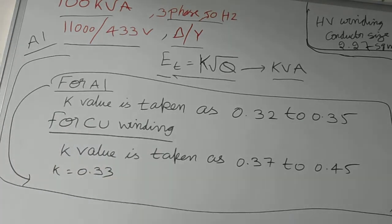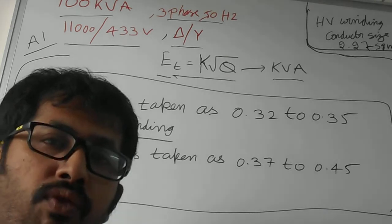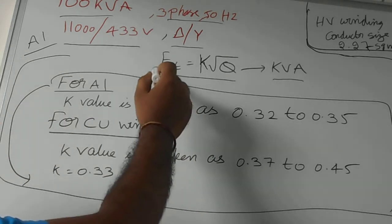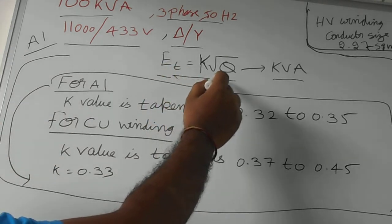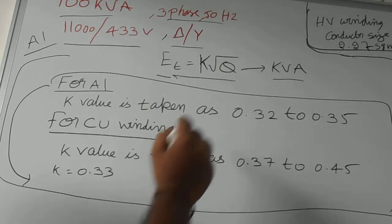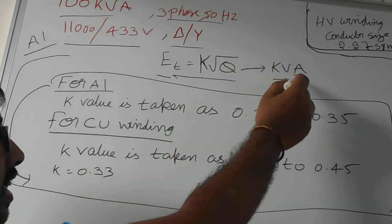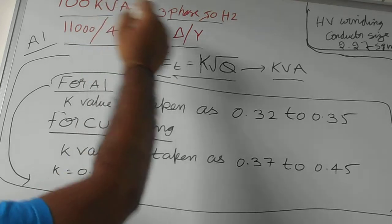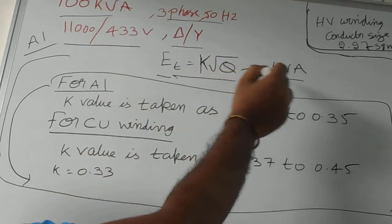Before finding that calculation we have to know the basic formula that is EMF per turn is equal to K into root of Q. So what is Q? It is a kVA rating. For example, we are taking 100 kVA, we have to substitute the root value of 100 kVA.